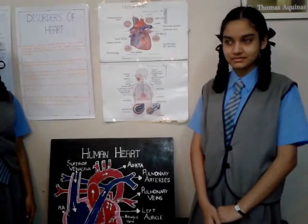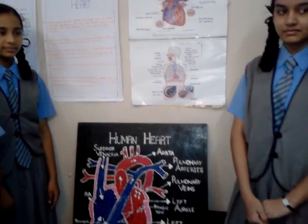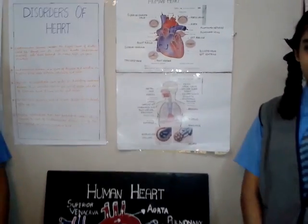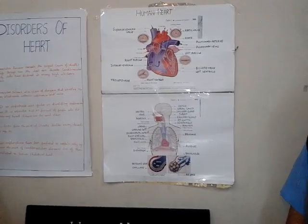Heart is the first organ formed in our bodies. Heart is a life-maintaining organ which pumps and circulates the oxygenated blood throughout the body. It provides nutrition to all the cells of the body and pumps the blood back to the heart where the whole cycle starts again.